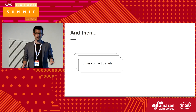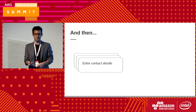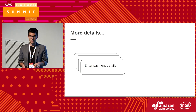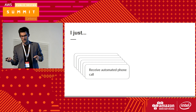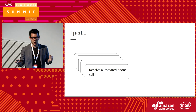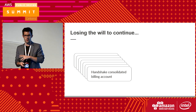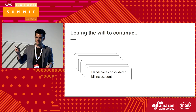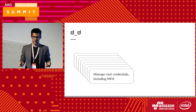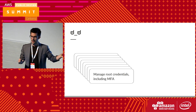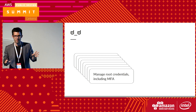You've got to enter your contact details — your country of origin, your cell phone number, your favorite color, your best friend's dog's name, or whatever. You've got to enter your payment details. You've got to complete a CAPTCHA to prove you're not a robot, and then you've got to receive an automated phone call from a robot — because irony. You've got to handshake the consolidated billing account, which is a manual process from both sides — from the person creating the account and from the cloud team who owns the consolidated billing account. And then you've got to manage the root credentials, including MFA. Does the person who created the account do that? If so, how do they get the credentials to us? Is it on a post-it note? Anyway, the Kanban team owns all the post-it notes.